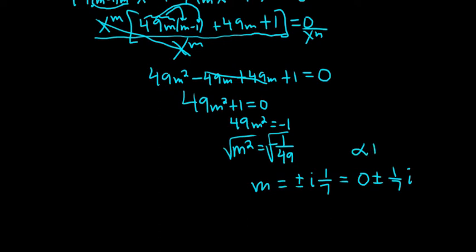That fits the form alpha plus or minus beta i. So we see that alpha is equal to 0 and beta is equal to 1 over 7.